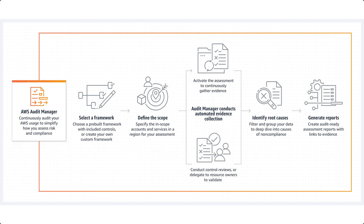Next is defining the scope itself. For example, you can specify the in-scope accounts and services in a region for your assessment. If you're in the Virginia region, US East, US West, or whichever region you're in, you can actually define the scope differently for each region. Once you do that, it activates the assessment to continuously gather evidence from that particular region.